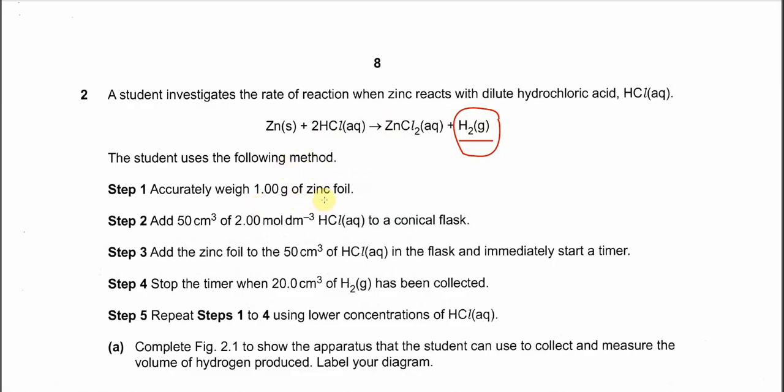Weigh 1 gram of zinc foil accurately and add 50 cm³ of 2 mol per dm³ acid into the conical flask. Add the zinc foil to the 50 cm³ of HCl in the flask and immediately start the timer. Stop the timer when 20 cm³ of H2 has been collected. Repeat steps 1 to 4 using a lower concentration of HCl - not 2 but lower than that.